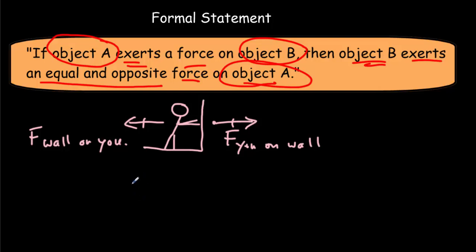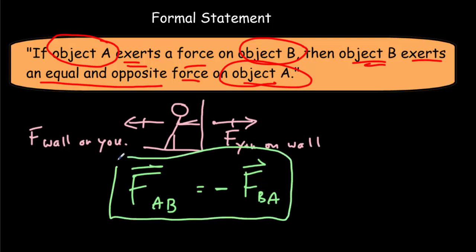Mathematically, we could write it this way. The force of A on B will be the same size as the force of B on A. These two forces are vectors, and their direction will be opposite to one another. So, there's Newton's third law, written as a concise mathematical statement.